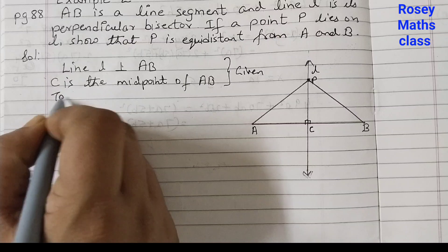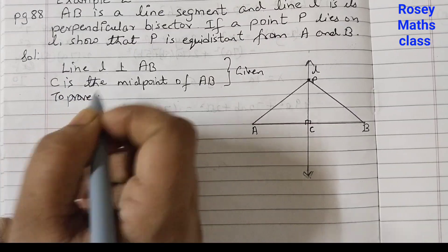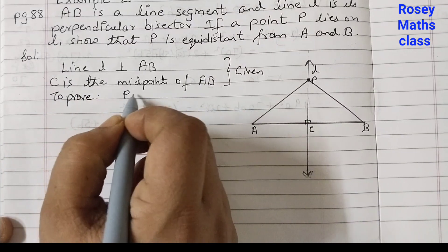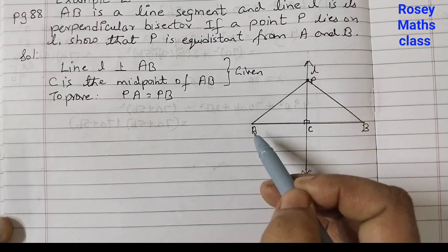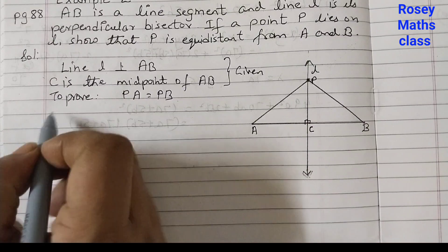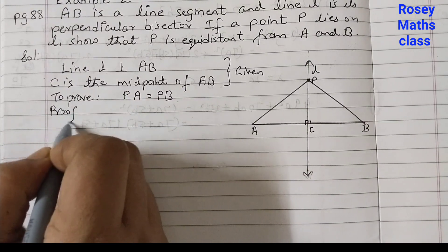Now we need to prove that PA is equal to PB. Proof.